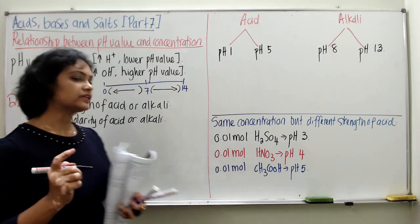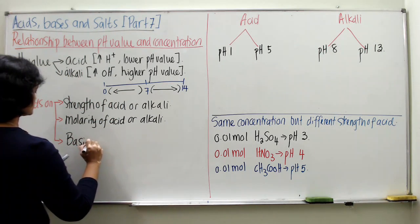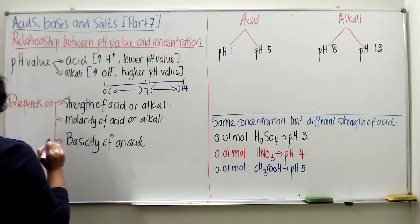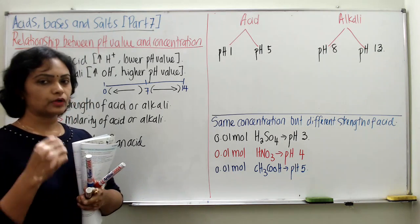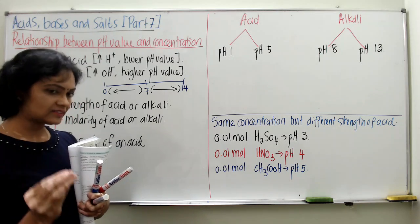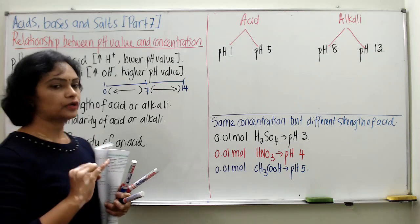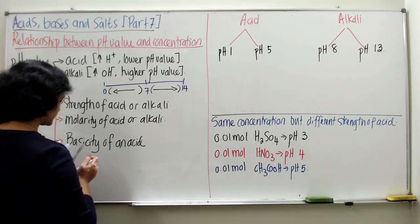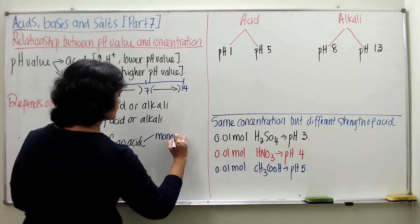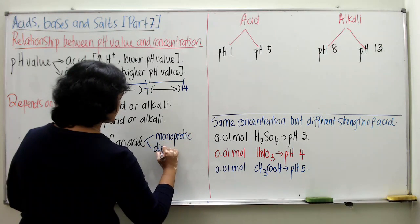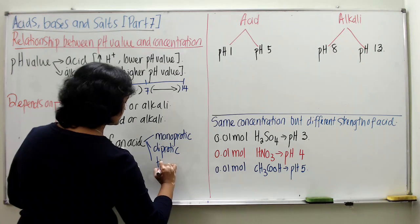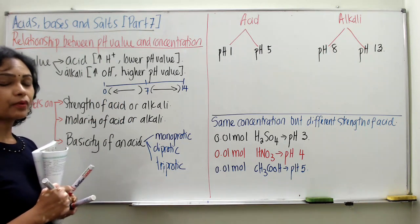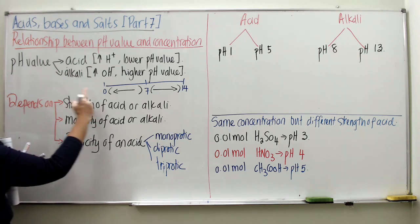Third is basicity of an acid — where the number of ionizable hydrogen atoms matters. In acid, teacher has told you regarding monoprotic, diprotic and triprotic acids. That is the reason why we talk about basicity of acid — whether it is going to be monoprotic, diprotic, or triprotic acid. These are the three factors affecting the pH value.